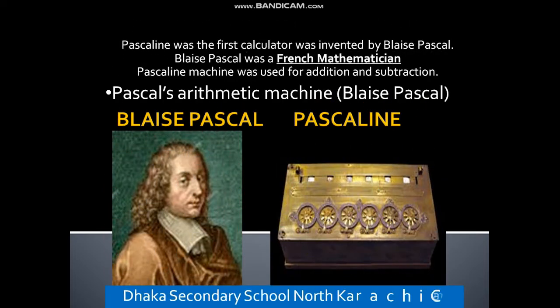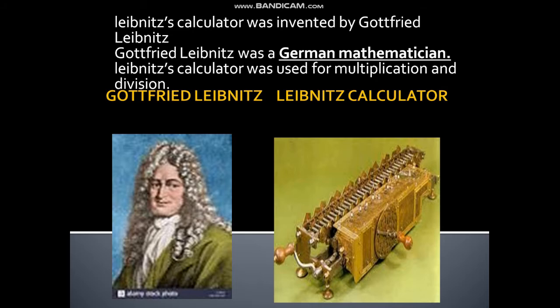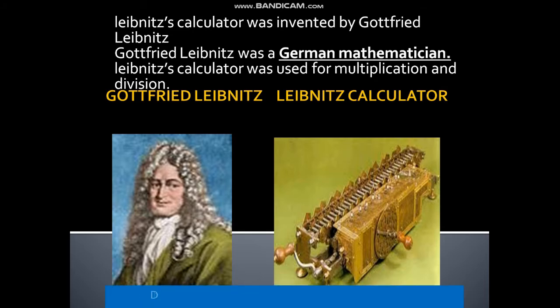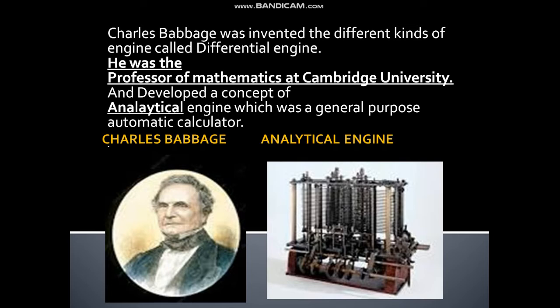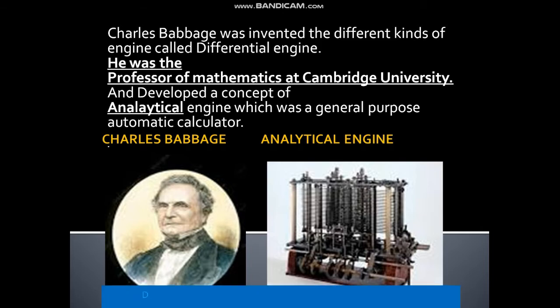Blaise Pascal's arithmetic machine was the first calculator, invented by Blaise Pascal, a French mathematician. The Leibniz calculator was invented by Gottfried Leibniz, a German mathematician. Charles Babbage invented a different kind of engine called the differential engine.